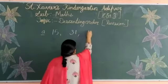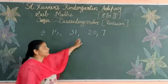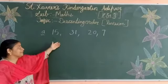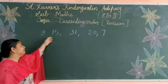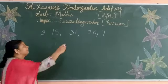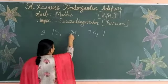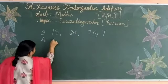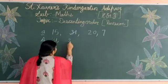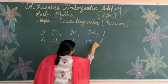Numbers: 13, 31, 20, and 7. In these numbers, which is the biggest number? You have to search the biggest number among all these numbers. So which one is the biggest number here — 15, 31, 20, 7? Yes, 31 is the biggest. So we write 31 first, then 20, then 15, then last 7.